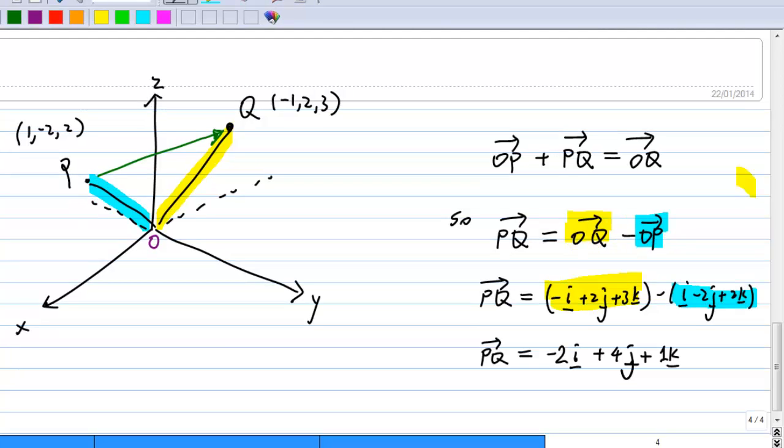So in the end, PQ has -i minus i, you get -2i, and 2j minus -2j, you get +4j, and 3k minus 2k, you get 1k. So PQ is -2i + 4j + k.